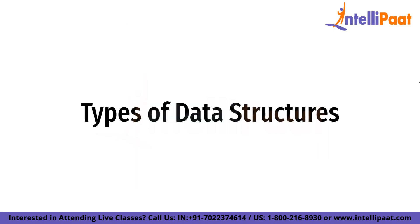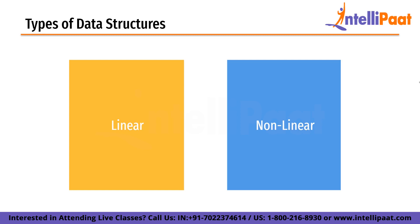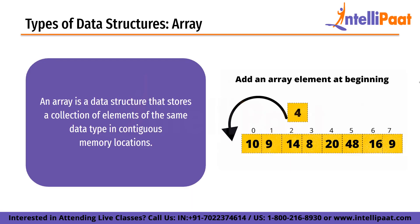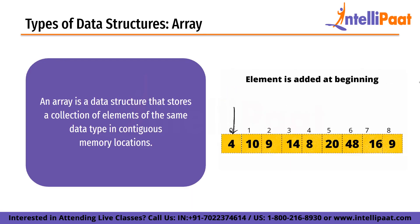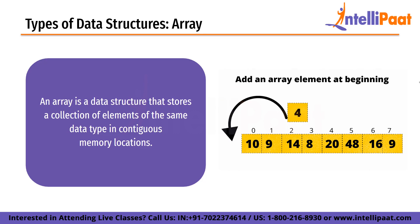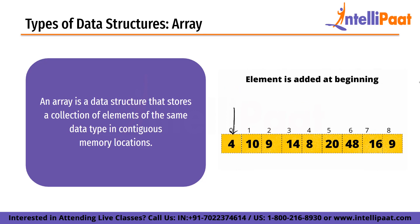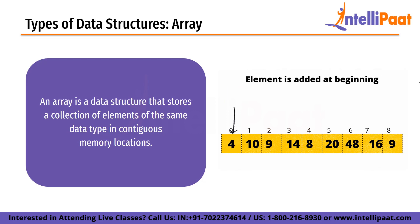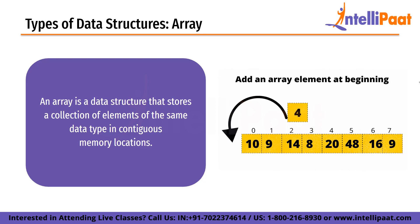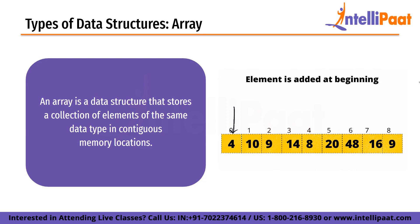Data structures are fundamentally divided into two types: linear and non-linear. An array is a data structure that stores a collection of elements of the same data type in contiguous memory locations. The elements of an array are accessed using an index which represents the position of the element in the array. Arrays are a fundamental data structure in computer science and are used in a wide variety of applications. They are particularly useful for storing and manipulating large amounts of data efficiently, as accessing an element in an array can be done in constant time.